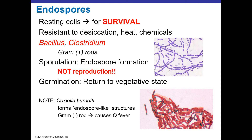Coxiella burnetii has an endospore-like structure, but it's not a true endospore. It's a gram-negative rod that causes Q fever, and it was one of the organisms that set our pasteurization temperatures since it's commonly found in unpasteurized dairy products. True endospores contain genetic material inside with a very hard outer covering. In a gram stain, the spore will not stain, so a special endospore staining procedure is needed to detect them.